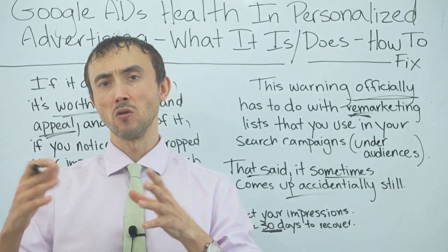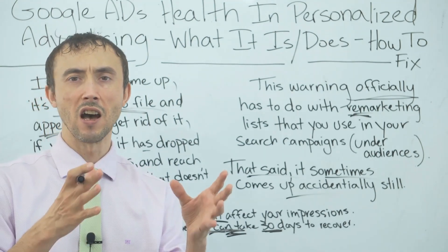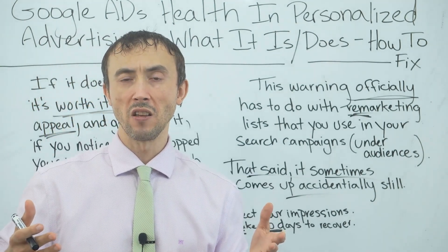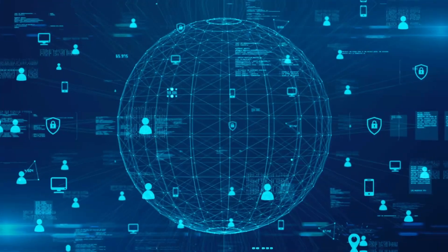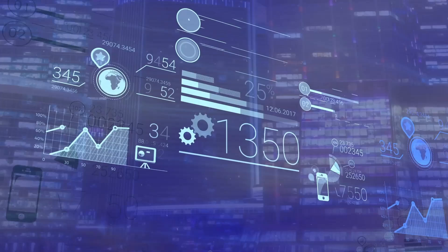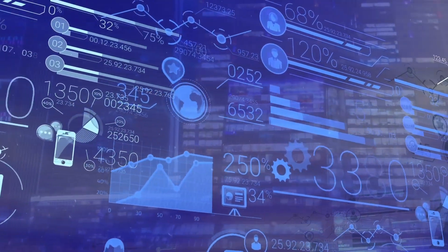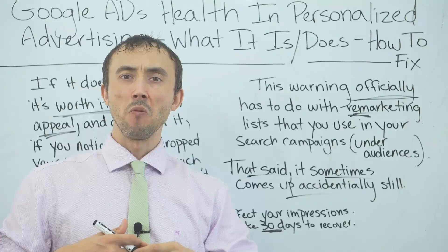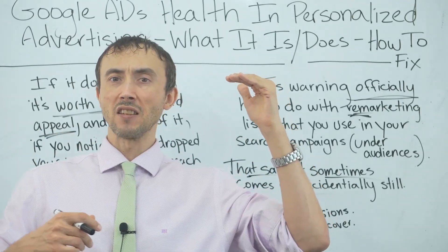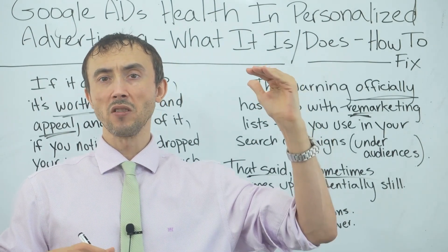Google wants to encourage the best performers to stick around, so they send the least likely to convert person to the worst performers. They know who's most likely to convert for your keywords because they can track everything a person does before making that search — for the last 10 years — including what they've searched for and what websites they've visited. When everyone uses smart bidding and says they want leads, Google sends those leads to whoever they want to keep on the platform.